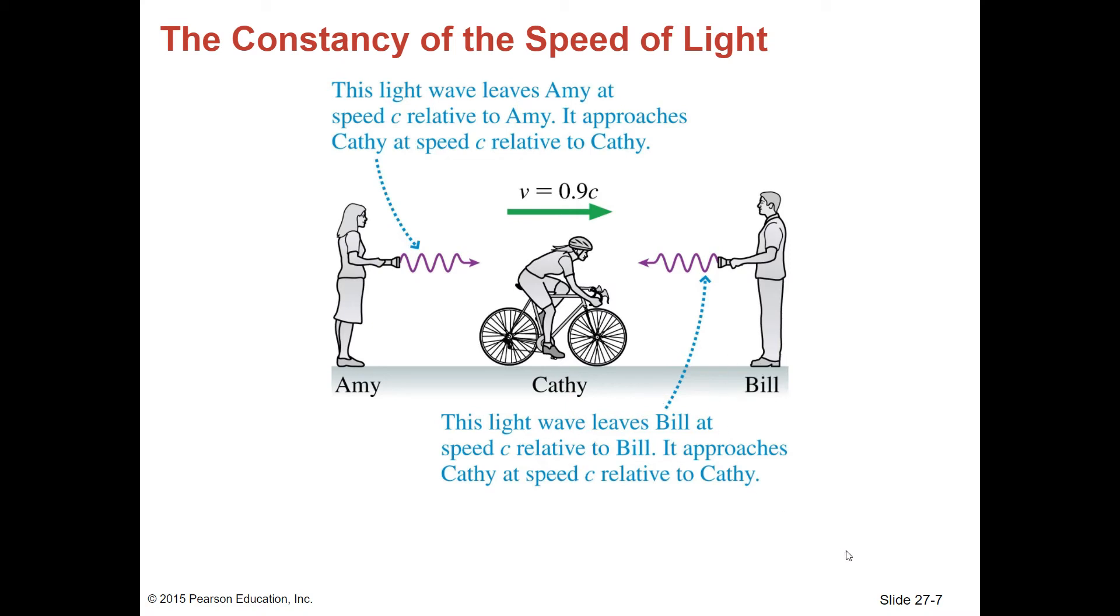Then you have Bill. This light wave leaves Bill at speed C relative to Bill, but it approaches Cathy at speed C relative to Cathy. Light travels at speed C in all inertial reference frames, regardless of how the reference frames are moving with respect to the light source.